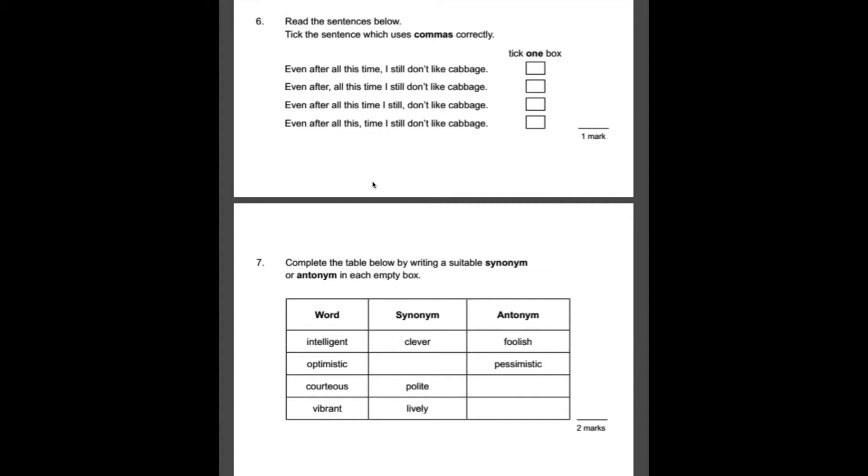Number six, read the sentences below. Tick the sentence which uses commas correctly. In this case, we have a sentence that is made up of a main clause and a subordinate clause. And what you should know is in between those two, there should be a comma separating the main and subordinate clause. So the main clause is I still don't like cabbage. That makes sense by itself. That's the main clause. And the subordinate clause would be even after all this time. That can't stand by itself. It doesn't make sense without the main clause. So in between those two clauses, there should be a comma which means that the first one is correct. Even after all this time, comma, I still don't like cabbage.